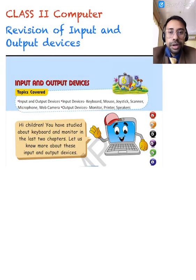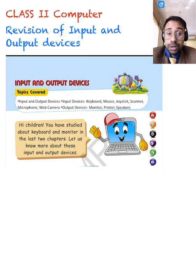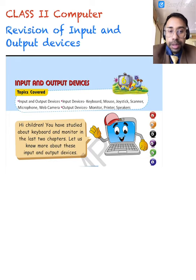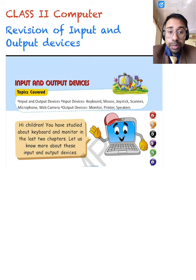Good morning, my dear children. Today we are starting off the revision for class 2 computer, and the chapter that we are going to revise is input and output devices. This is the revision because, as you already know, we have completed the chapter. It is very important for us to revise this particular chapter. So this is chapter number 6 that we will be revising today.